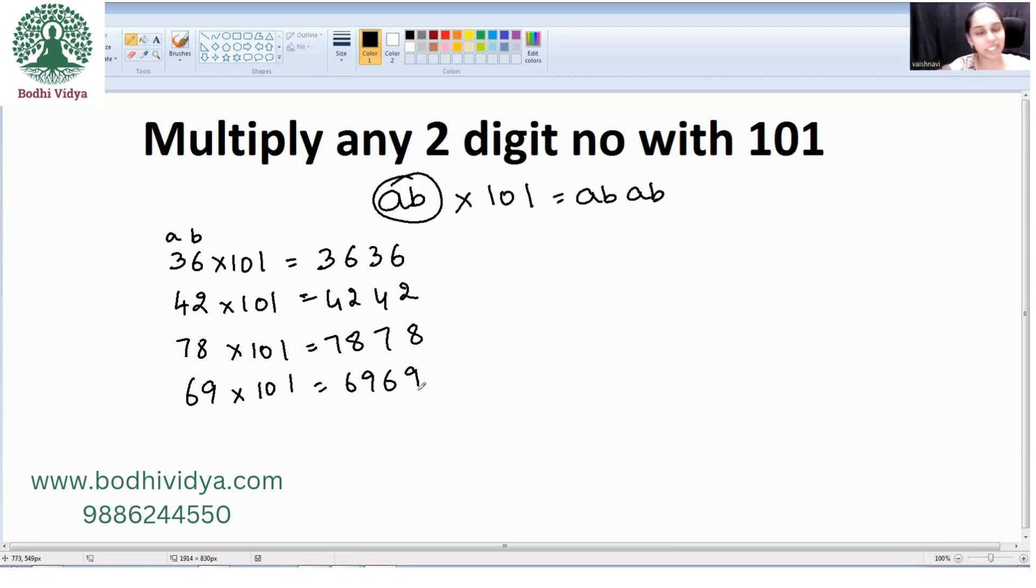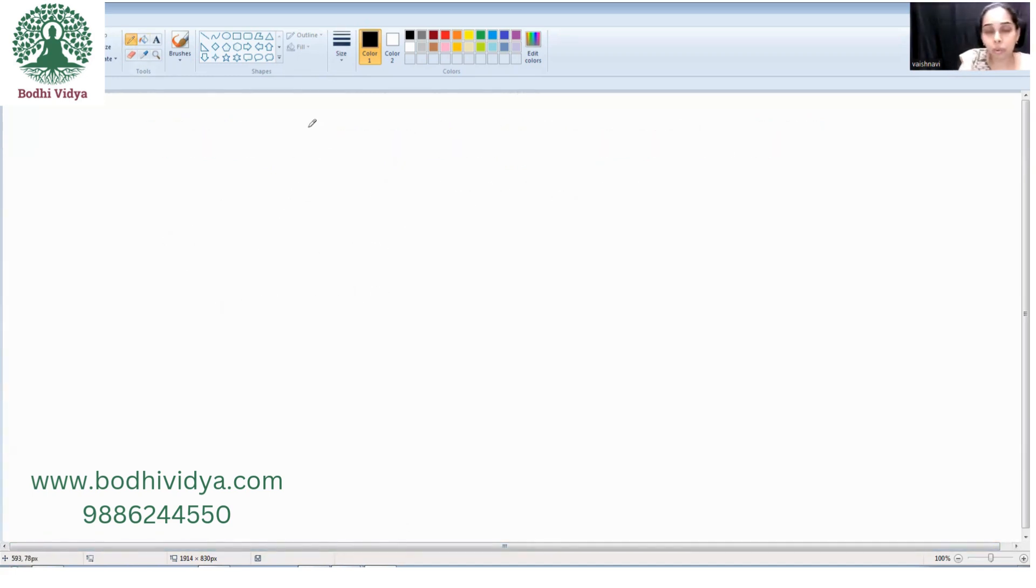Mind-blowing, right? Yes, you can check through your calculator as well. Now, the question arises: how to multiply any three-digit number with 101?